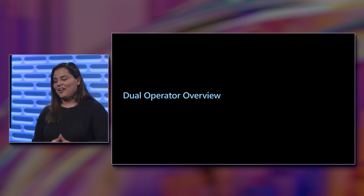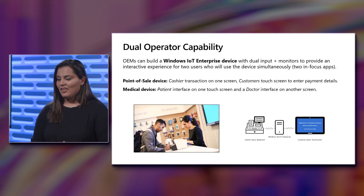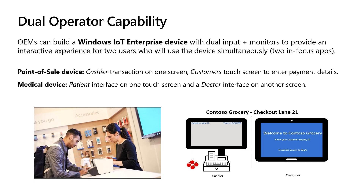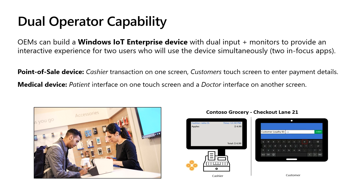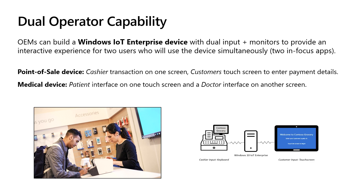So what is this dual operator? It's an incredible capability and we're very excited to showcase this, as it's been a demand from our ecosystem and our partners for quite some time. OEMs can go ahead and build a Windows IoT Enterprise device with dual input and dual monitors that have an interactive experience for two users who will simultaneously use the device with two in-focus applications. One scenario is a point of sale device where you have a cashier on one screen and a customer on the other, doing different types of input to process their payment — maybe one on touch screen, maybe the cashier using a keyboard.